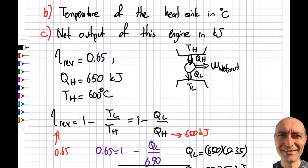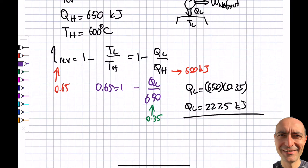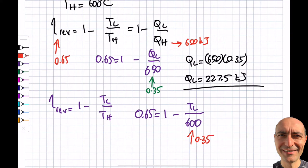Part B asks for the temperature of the heat sink, so TL in Celsius. For the reversible engine, η_rev = 1 - TL/TH. I'll use this relationship and write 0.65 = 1 - TL/TH, so TL/TH = 0.35. Therefore, TL = 0.35 × 600, right?